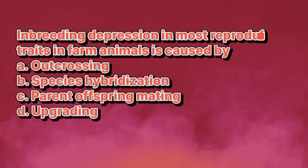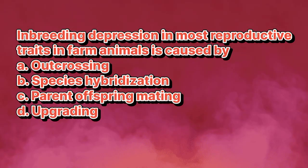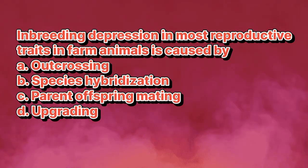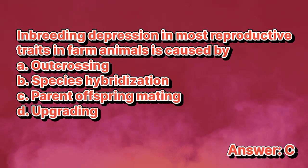Inbreeding depression in most reproductive traits in farm animals is caused by: A. Outcrossing. B. Species hybridization. C. Parent-offspring mating. D. Upgrading. The answer is letter C.